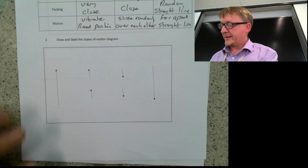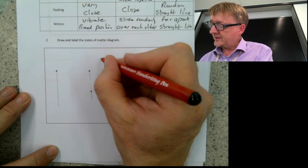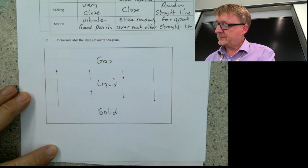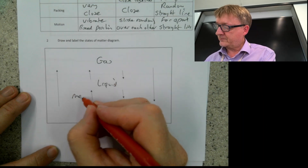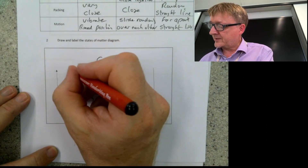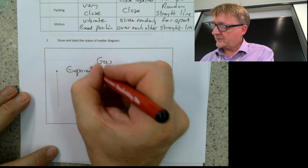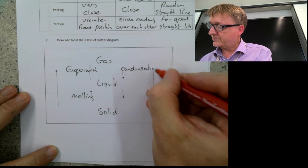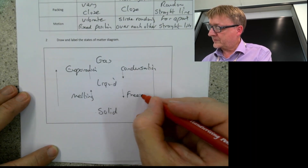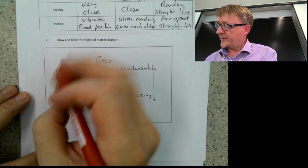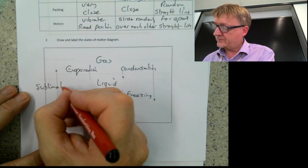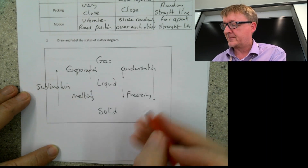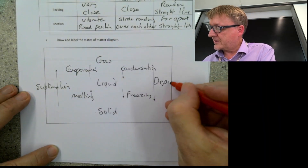Number two: draw and label the diagram for the states of matter. We have gas, liquid, and solid. Solid to liquid is melting. Liquid to gas is evaporation. Gas to liquid is condensation. Liquid to solid is freezing. Solid all the way to a gas is sublimation — the best example is carbon dioxide, which can go straight from solid to gas, missing out the liquid phase. Gas to a solid, the opposite, is called deposition.